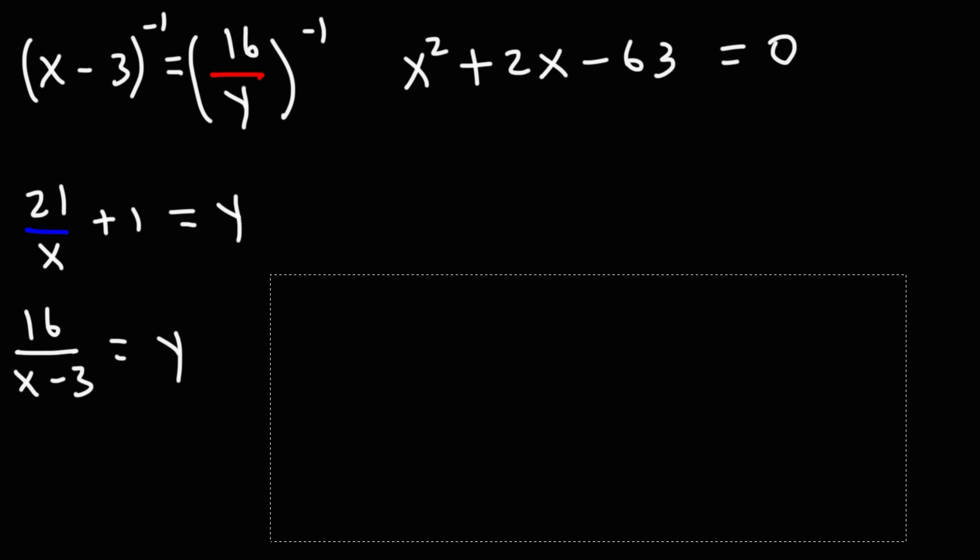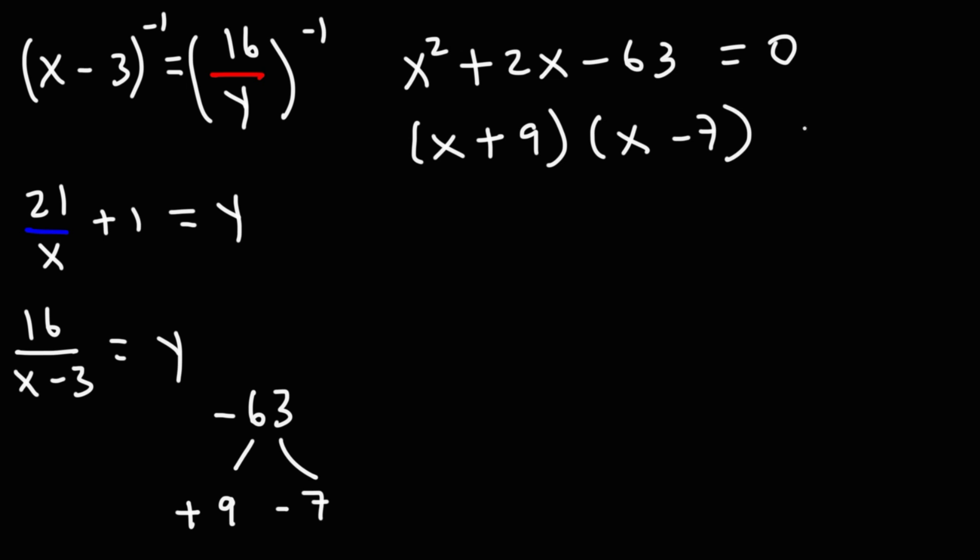So I have x squared plus 2x minus 63 equals 0. Now let's factor this trinomial. So we need two numbers that multiply to negative 63, but add to positive 2. So this is going to be 9 and 7, but positive 9, negative 7. 9 times negative 7 is negative 63, but 9 plus negative 7 adds up to positive 2. So to factor it, it's x plus 9 times x minus 7.